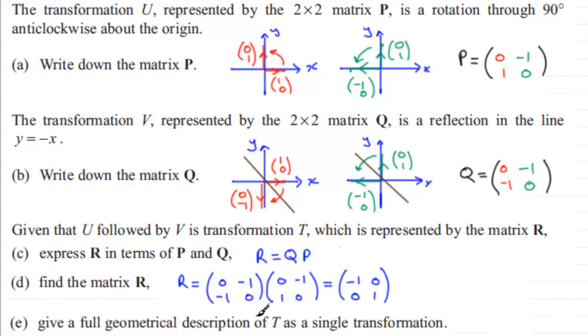Okay, now in part E it says give a full description of T as a single transformation. Well to describe that, what I'm going to do is essentially go back to looking at what happens to my two unit base vectors under this transformation. Our first unit base vector (1,0) has gone to (-1,0), which will be over to here into that position. Now that could be one of two things: it could be a reflection in the y-axis, or it could be a rotation of 180 degrees about the origin.